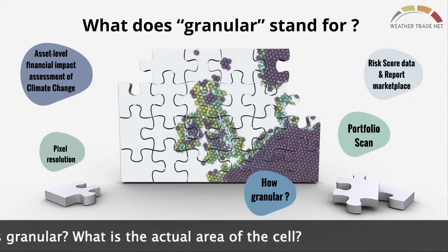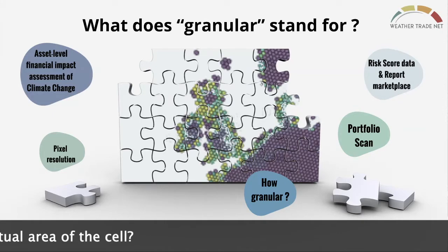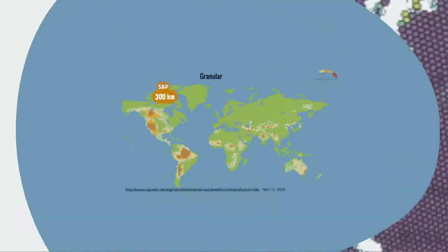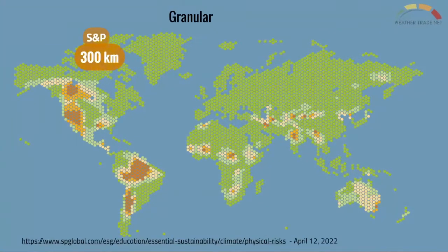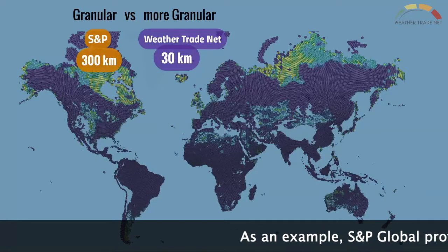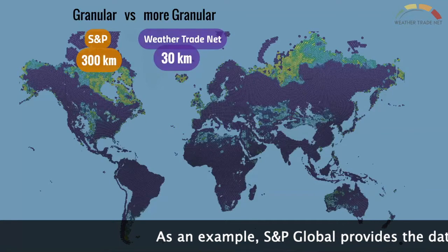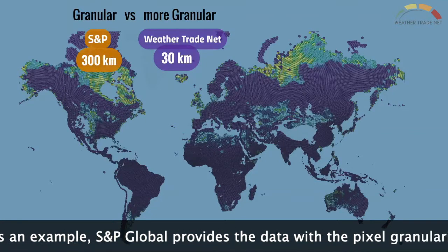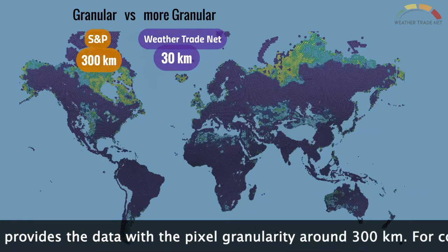So, how granular is granular? What is the actual area of the cell? As an example, S&P Global provides the data with a pixel granularity around 300 kilometers. For comparison, our platform provides the granular data of 30 kilometers.